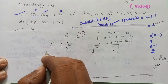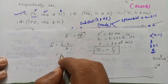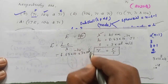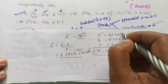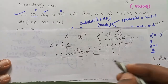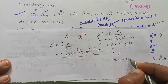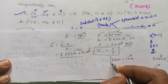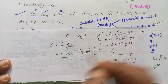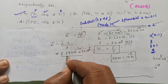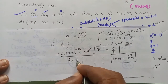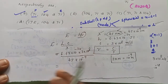Substituting the values: E equals 6.63 into 10 raised to minus 34 multiplied by 3 into 10 raised to 8, divided by 45 nanometers. But wavelength is in nanometers, so we first convert: 1 nanometer equals 10 raised to minus 9 meter. So the denominator becomes 45 into 10 raised to minus 9.